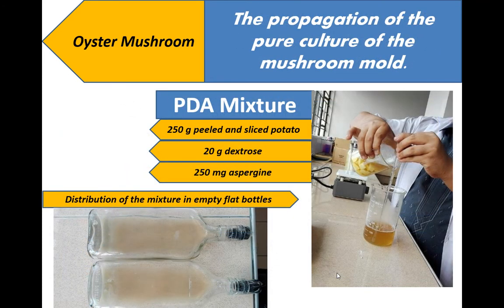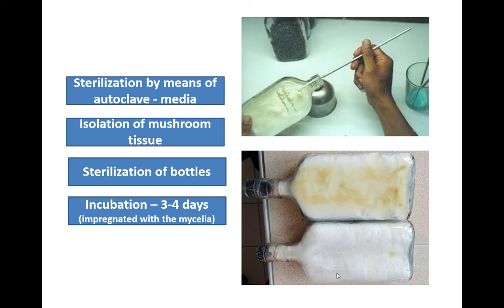Let's first discuss the propagation of the pure culture of the mushroom mold. We are required to have a PDA mixture, composed of 250 grams of peeled and sliced potato, 20 grams of dextrose, and 250 milligrams of aspergine. We will use flat bottles — specifically a tandwai bottle in the Philippines — for the distribution of the mixture. Before we put the mushroom tissue, we need to sterilize the bottles using autoclave, and use an inoculating loop for the isolation of the mushroom tissue. The mushroom tissue is from the oyster mushroom sample. The incubation period is three to four days, where you can see the flat bottles impregnated with mycelia.